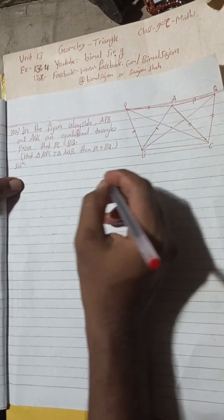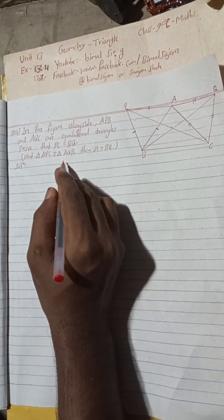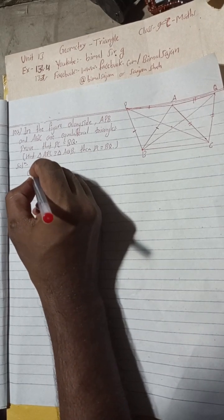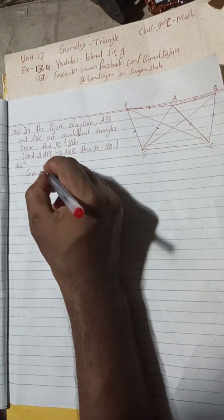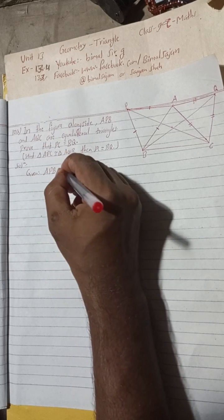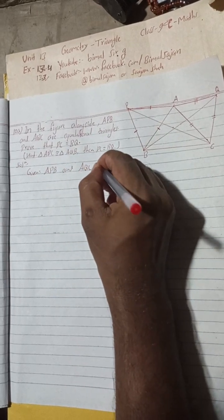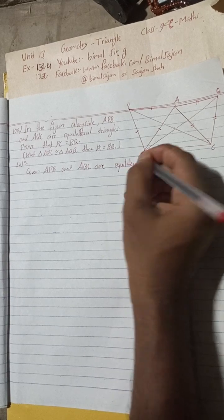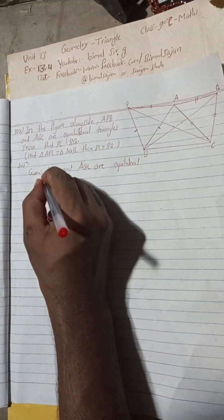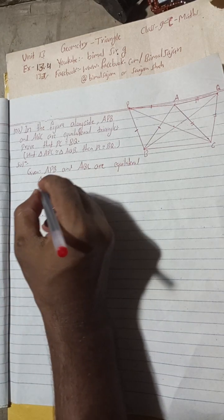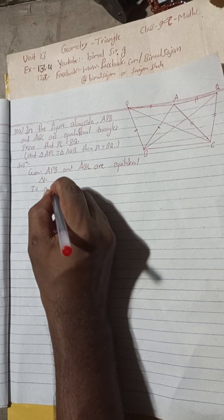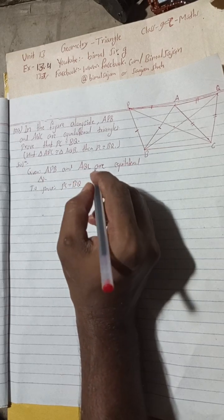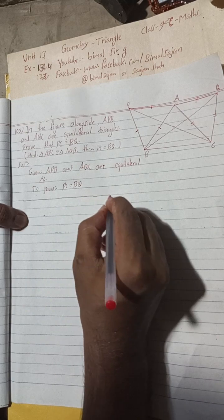So the trick is given there. Suppose if it is not given, then we have to think ourselves what is to prove. This is PC and BQ, so PC is of this triangle and BQ is of this triangle, so we can take both triangles to show they are congruent. Now let's begin. Given: APB and AQC are equilateral triangles. To prove: PC is equal to BQ.